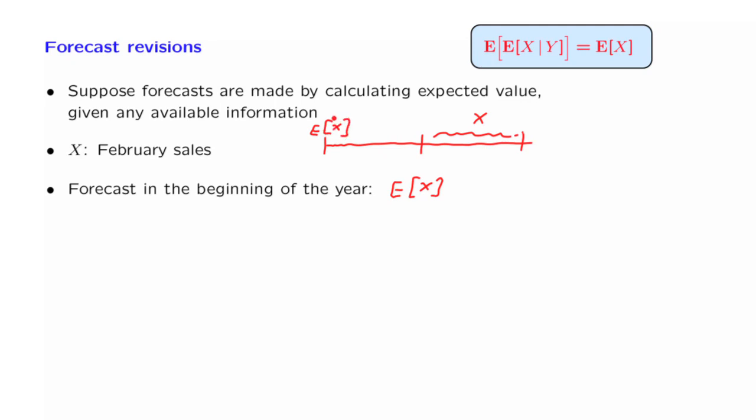Now time goes by. And we're sitting now in the beginning of February, or the end of January. At that time, you obtain some new information, which is the value, little y, of a random variable, capital Y.